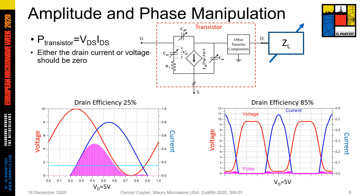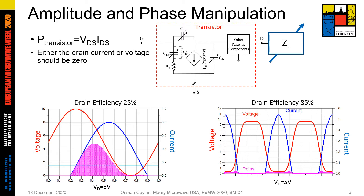I will show you two simulation results to explain how the current and voltage waveforms at the current source plane affect the efficiency of a power amplifier. If there is some voltage at the drain and current flows from drain to source at the same time, it causes power dissipation on the transistor, because electrical power is a product of current and voltage. The red curve is the voltage and the blue curve shows the current. The pink area, which shows the overlapped area by the current and voltage waveforms, is the power dissipated on the transistor. If the overlapped area is large, it causes more power dissipation and the efficiency reduces.